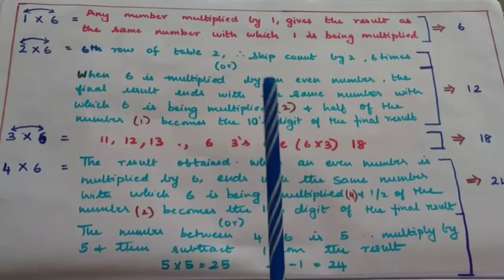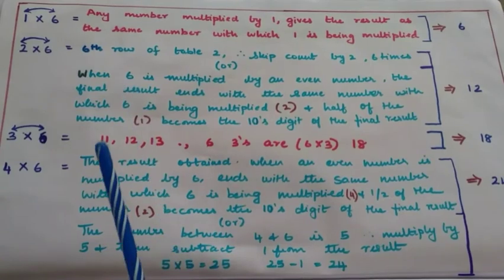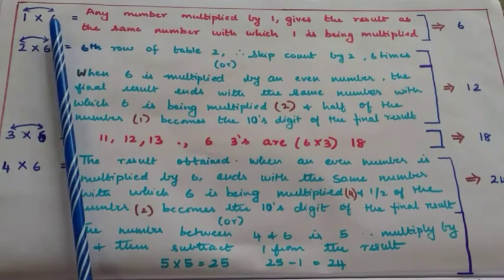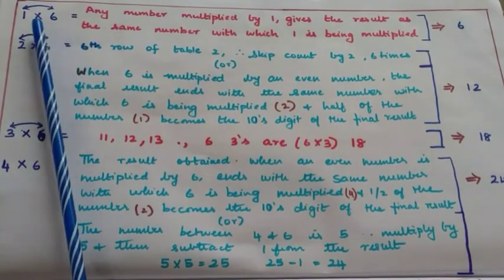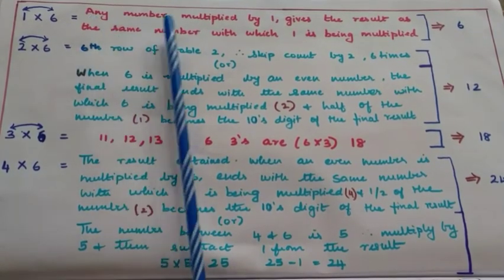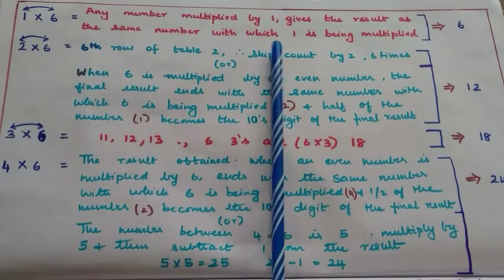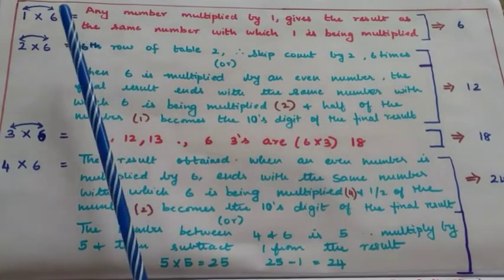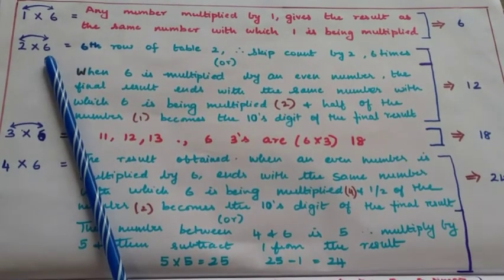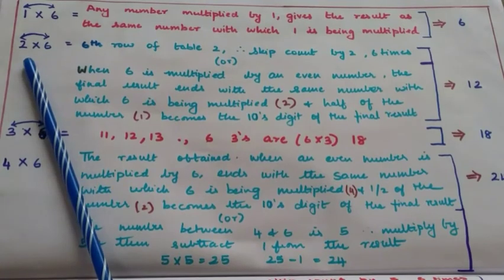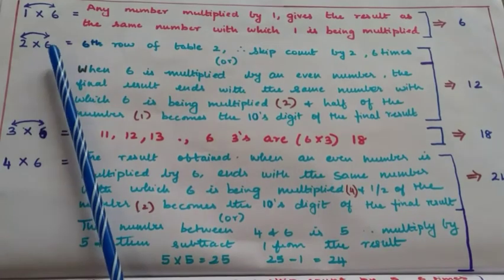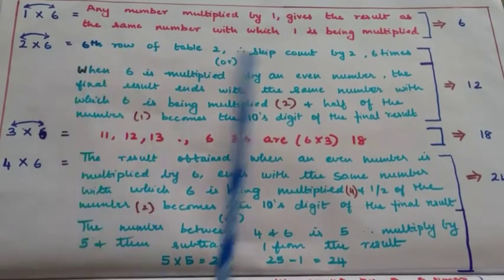Now let's discuss how to make the child memorize table 6 row by row. For row 1, since 1 into 6 is the same as 6 into 1, any number multiplied by 1 gives the same number — therefore 1 six is 6. For row 2, since 2 into 6 is the same as 6 into 2, you can skip count by 2 six times to obtain 12.